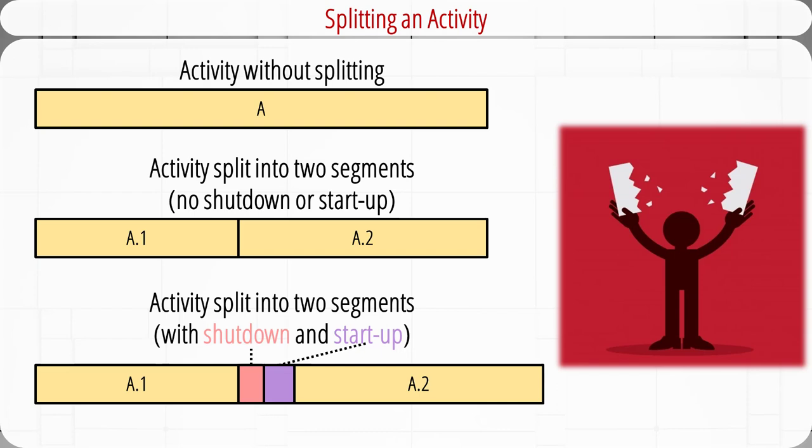Splitting involves interrupting work on an activity to employ the resource on another activity, then returning the resource to finish the interrupted work. Splitting is only feasible when startup and shutdown costs are low for an activity, and it should not be overused — otherwise, it can be a major reason why projects fail to meet schedule. The most common error is to interrupt people's work when there are high conceptual startup and shutdown costs. Planners should avoid splitting as much as possible, except when splitting costs are known to be small and there is no alternative for resolving the resource problem. Computer software like Microsoft Project offers a splitting option, but use it sparingly.